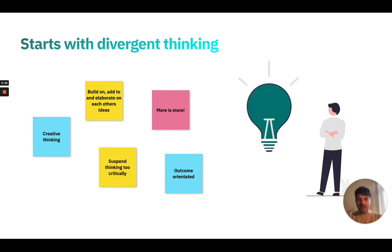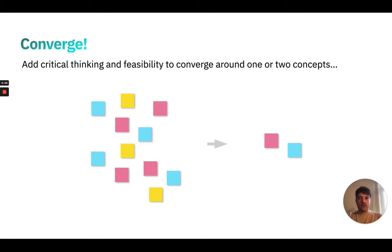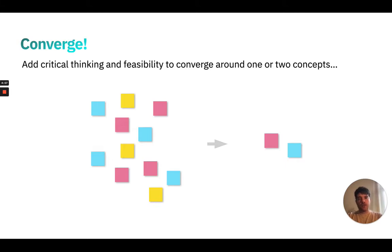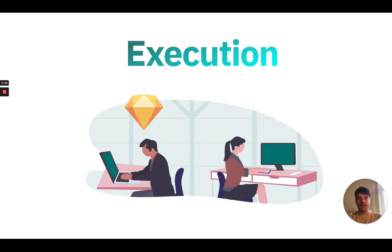This is not artistry — it's about thinking in different ways, and we want to be outcome-oriented. Following this generation of different ideas, we then apply more critical thinking and some feasibility assessment around the ideas that have been collected, to try and narrow down on one or two concepts to take forward into a design stage.